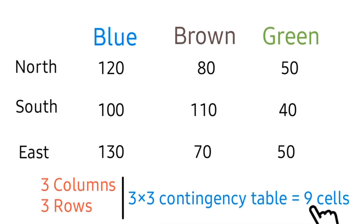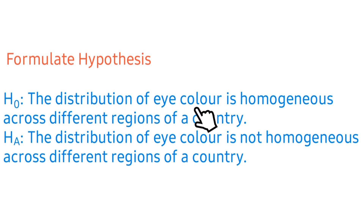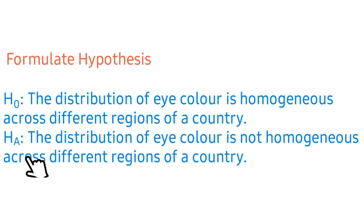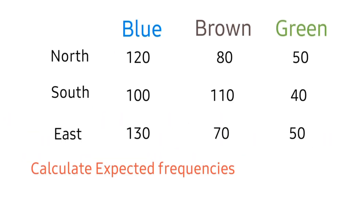The first thing to do is to formulate hypotheses. The null hypothesis states that the distribution of eye color is homogeneous across different regions of our country, while the alternative hypothesis states that the distribution of eye color is not homogeneous across different regions of our country. Next is to calculate expected frequencies.